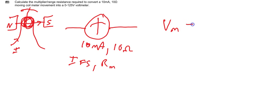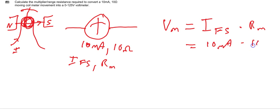And we have 10 milliamps times 10 ohms. Now if we write the current as 0.01 amps and multiply that by 10, we get 0.1 volts.